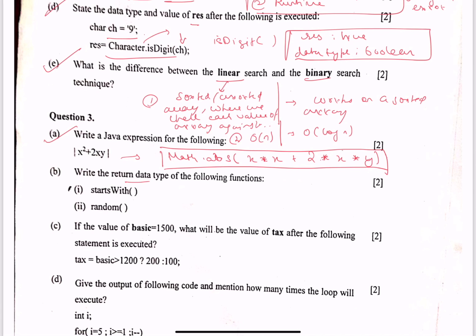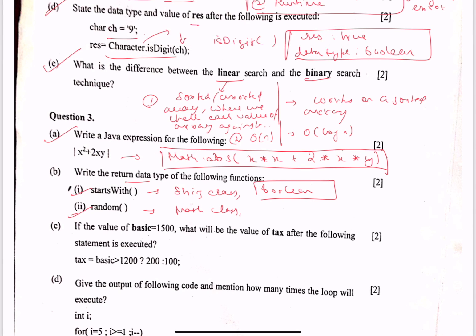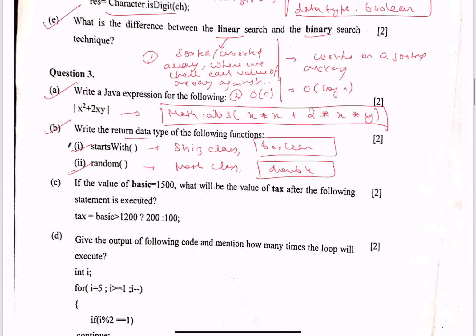Moving on to question 3B: write the return data type of the following functions. startsWith is a function of the String class, so the return type is boolean for part one. Part two: random is a method of the Math class and the return type is double — it returns a value between zero and one.